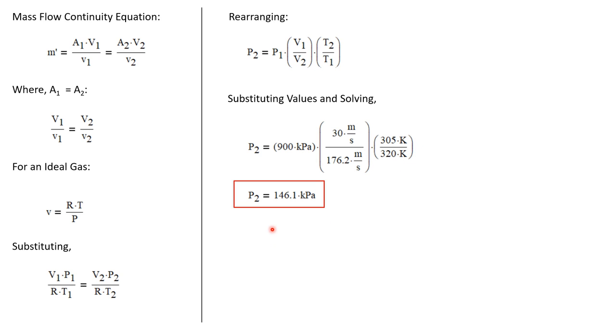And we calculate that P2 is 146.1 kilopascals, remembering that P1 was 900 kilopascals. This is a significant pressure drop. So this debris is really plugging up this pipe.